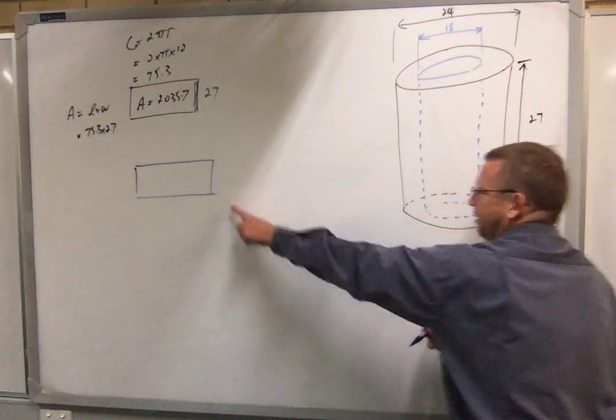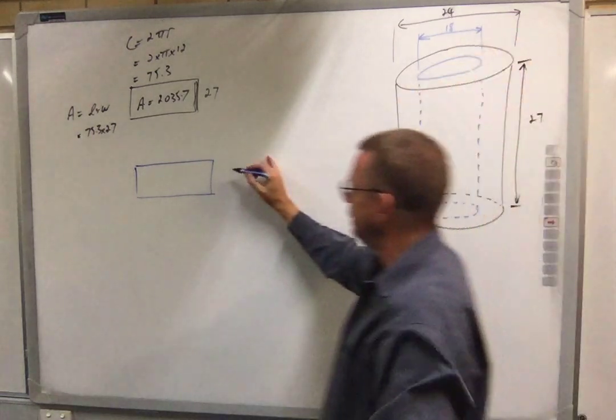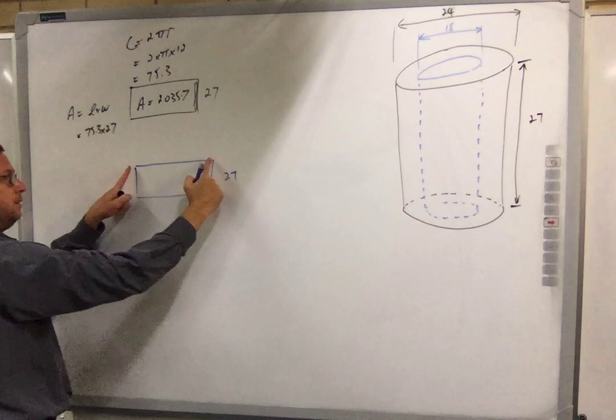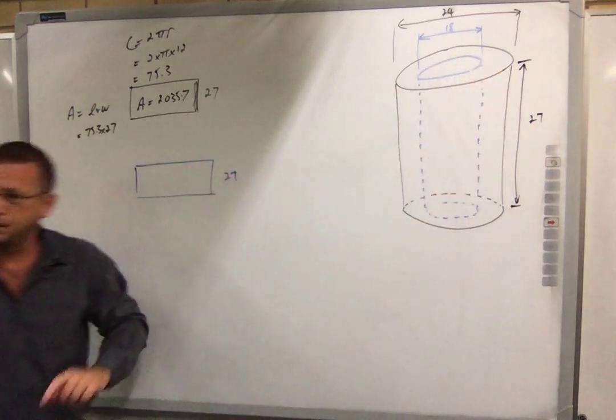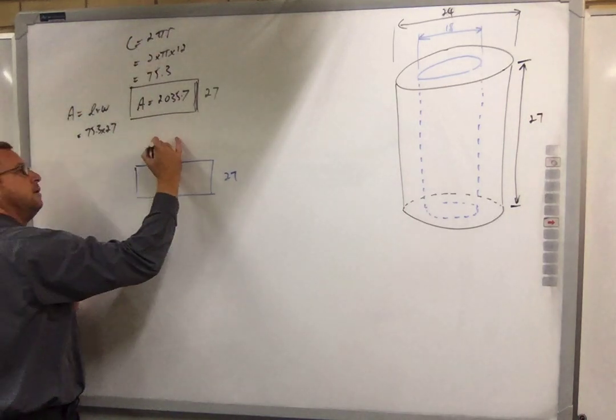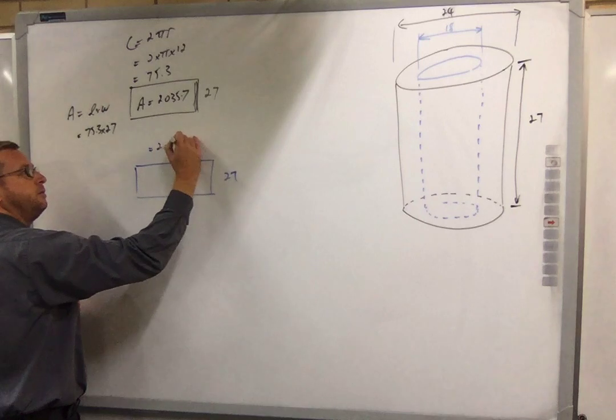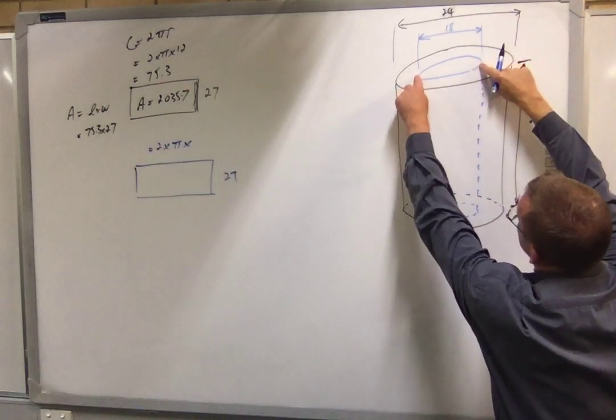This length is what? This length is that which is the circumference of the circle. So we're going to use that blue and go circumference equals 2 times pi times, what's the radius of this inside circle? 9.